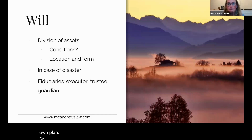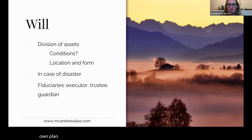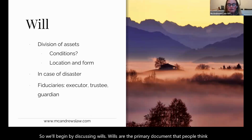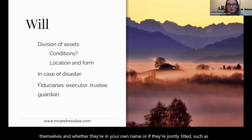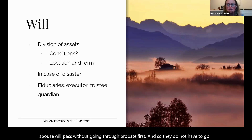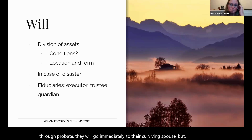We'll begin by discussing wills. Wills are the primary document people think about when they create an estate plan. A will contemplates the property that you have in your name, who you want to leave that property to, and who you want to oversee that process. Assets that are jointly titled between you and a spouse will often pass without going through probate first — immediately to the surviving spouse. But when that second spouse dies, the will is an important designation of who receives the property next.